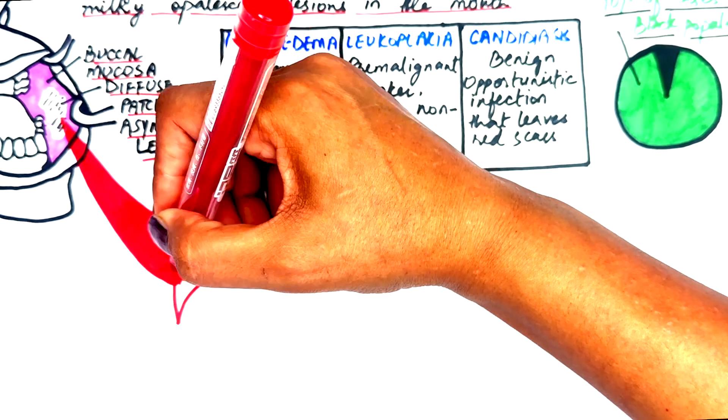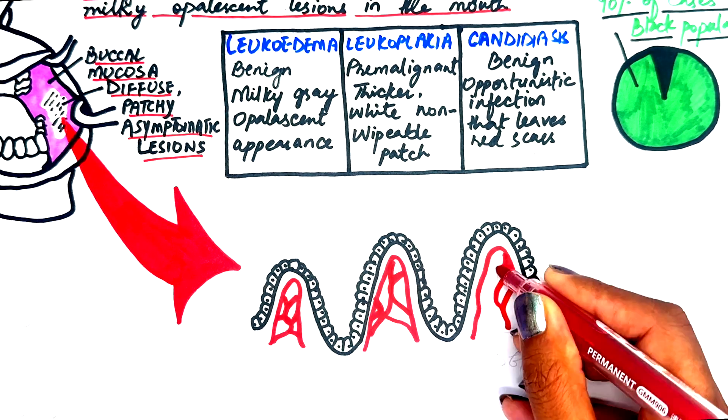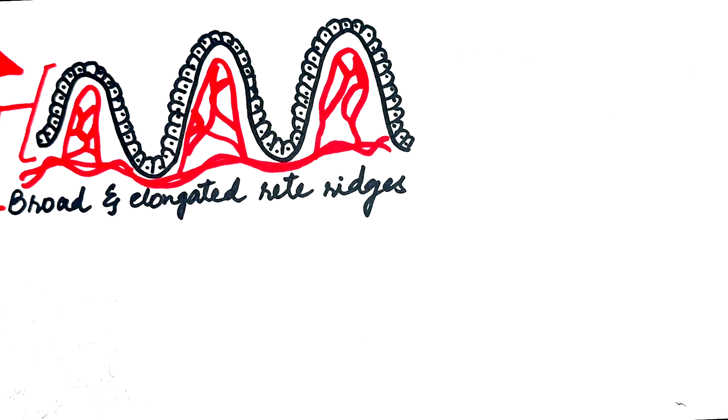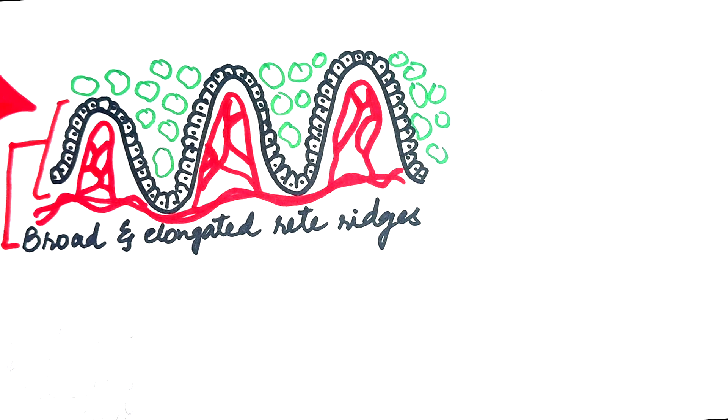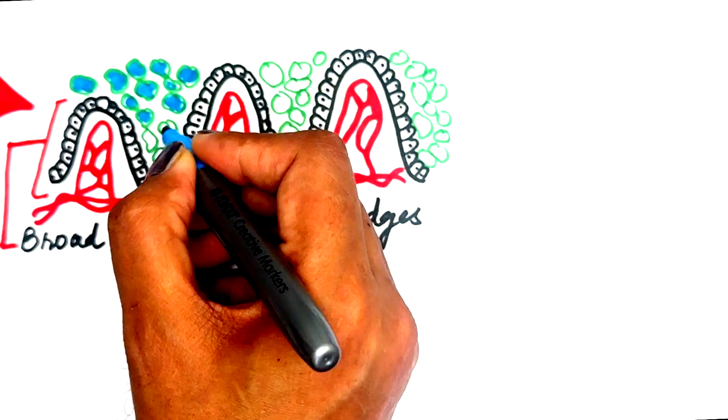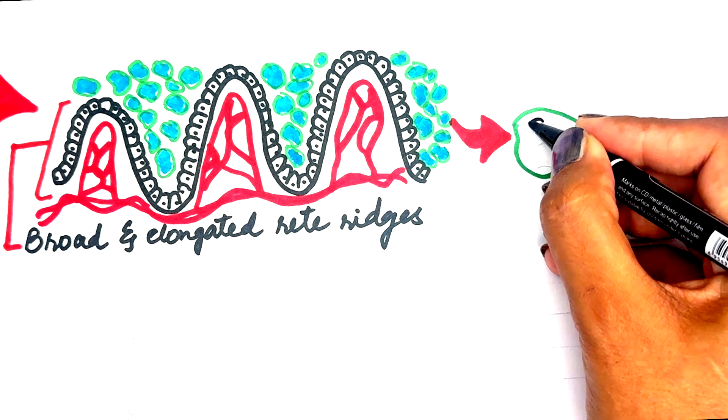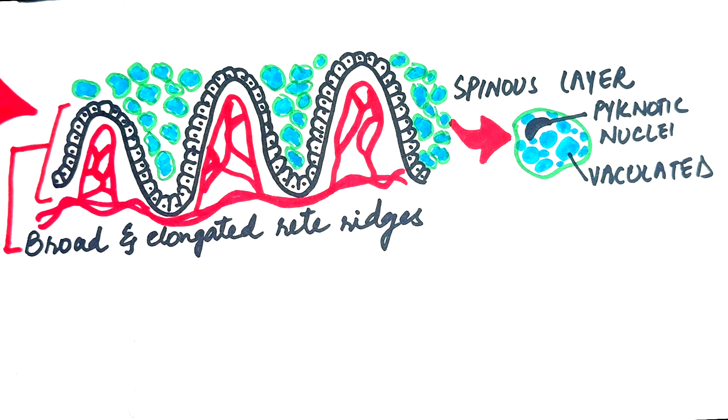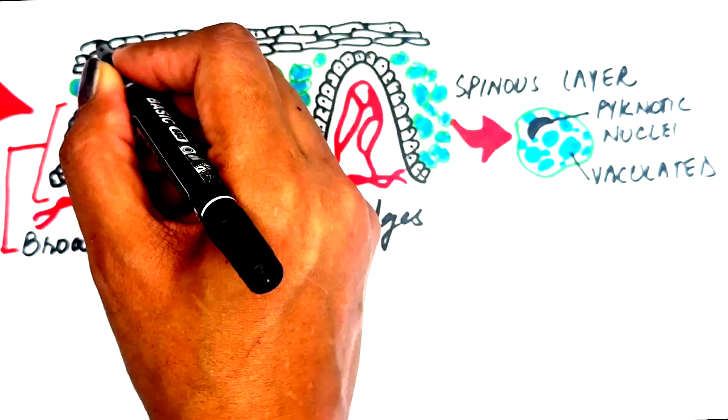Microscopic examination of leucoedema reveals elongated and broad rete ridges. A closer snap on the epithelial cells shows a thickened epithelium with intracellular edema in the spinous layer. The affected cells appear vacuolated with pyknotic nuclei, and the surface may be parakeratinized.